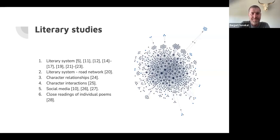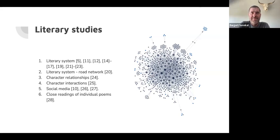Another study I want to highlight is the road network study. You can study a road network by looking at which roads intersect with which other roads — usually a geography application. But we have a neighborhood in Bloemfontein called Langenhoven Park where most streets are named after Afrikaans authors. By analyzing that road network, I was able to identify the key roads and look at who they were named after, comparing that to a literary history.